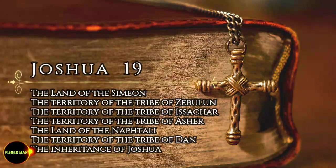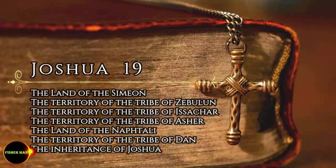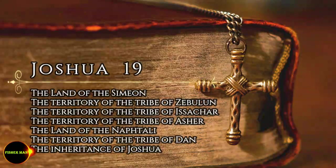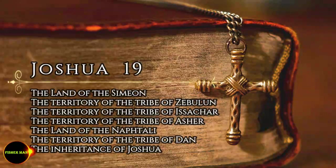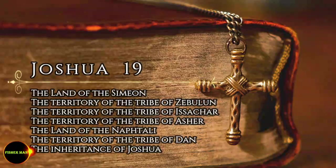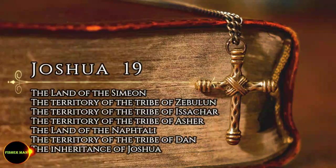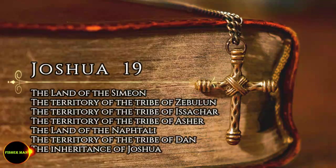When they had finished dividing the land into its allotted portions, the Israelites gave Joshua, son of Nun, an inheritance among them, as the Lord had commanded. They gave him the town he asked for, Timnath-Sarah, in the hill country of Ephraim. And he built up the town and settled there.